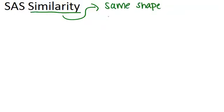In this video, we are going to learn about SAS similarity. First, let's briefly review what it means for two shapes to be similar. The basic idea is that they will be the same shape, but not necessarily the same size.